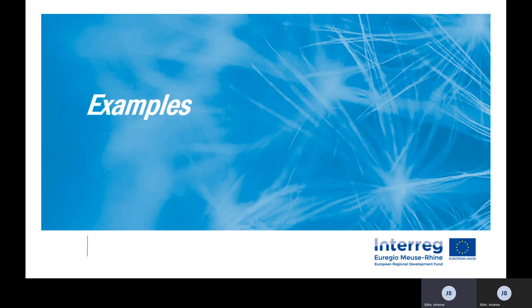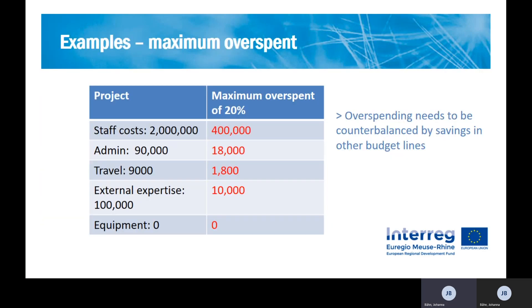Let's run through a couple of examples to understand the application of the flexibility rule. First, how to calculate the maximum overspend. Here we have a project with a staff cost budget of 2 million and travel cost of 9,000 and external expertise of 100,000. On the staff cost budget line, you can go up to 400,000 extra — so in total you might be able to spend 2,400,000 on staff costs. That gives you a lot of flexibility, but those extra 400,000 spent on staff costs need to be saved somewhere else. In this theoretical example you would not actually be able to do that because there isn't enough budget under the other budget lines.